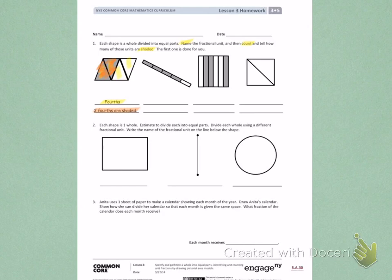When I look at this picture, I can count and see there is 1, 2, 3, 4, 5 equal parts. When there are 5 equal parts, the fractional unit is called fifths.